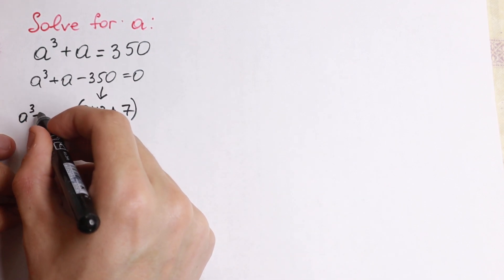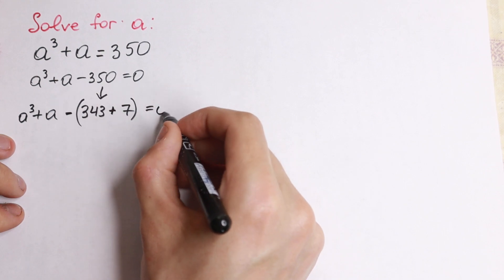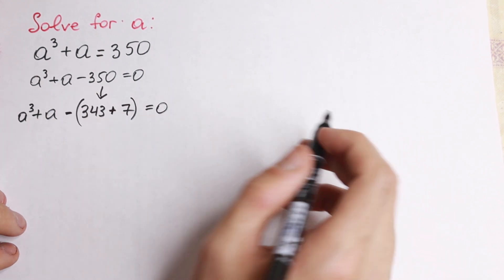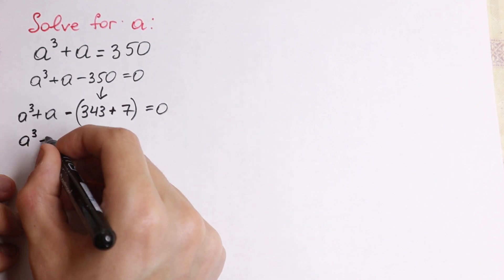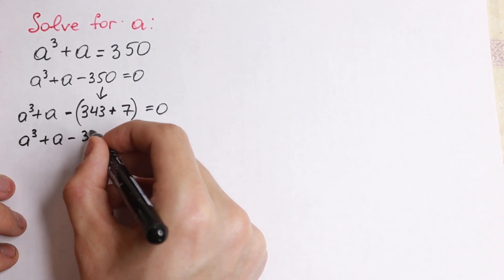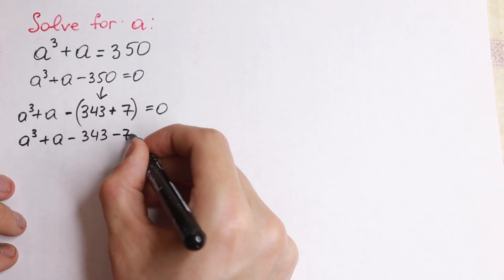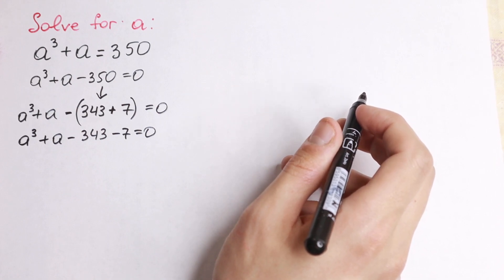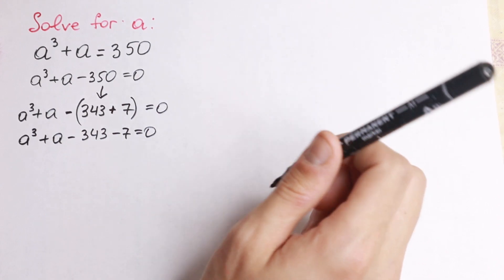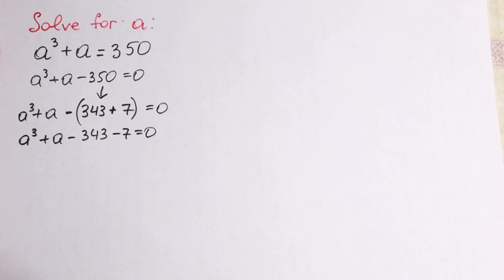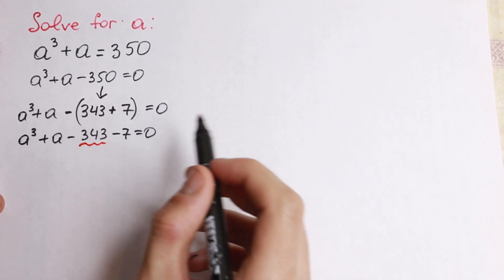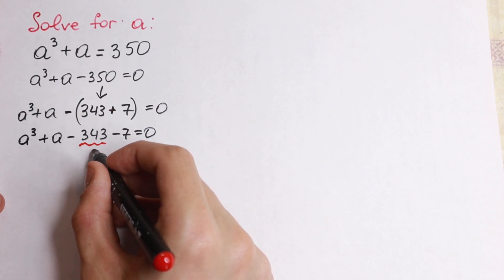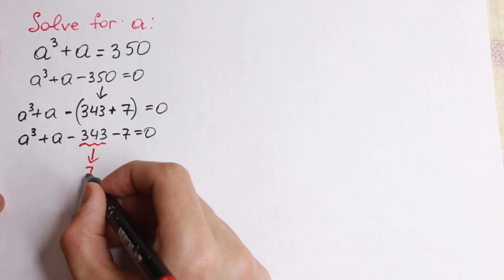So we have a cube plus a. I hope you understand this step, because now I'm going to open these parentheses and as a result we'll have a cube plus a minus 343 minus 7 equal to 0. But why did I write this 350 like that? Because 343 is a really special number — it uses 7 as well, because 343 is equal to 7 cube.